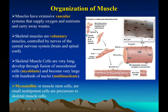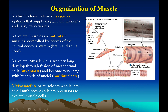Skeletal muscles are very vascular with a rich blood supply. They are voluntary and controlled by nerves of the brain and spinal cord. Muscle fibers develop through fusion of mesodermal cells called myoblasts — many myoblasts fuse to form this long cylindrical cell, which is why it is multi-nucleate. Myosatellite cells are stem cells that are multipotent and have very little cytoplasm; they are the precursors of muscle cells.